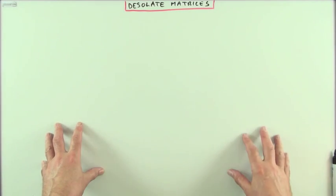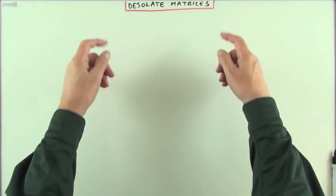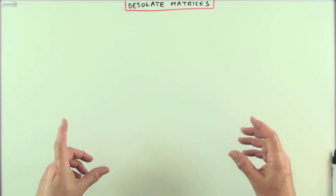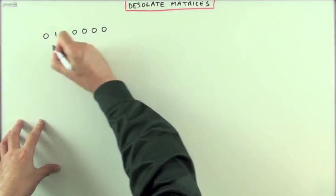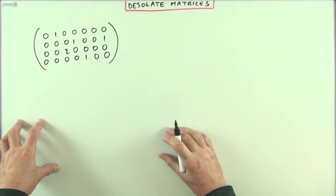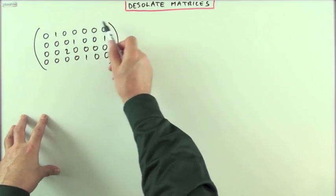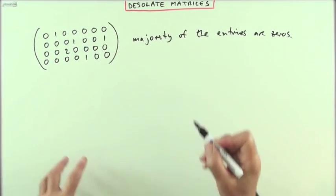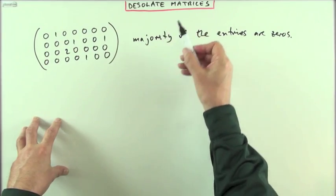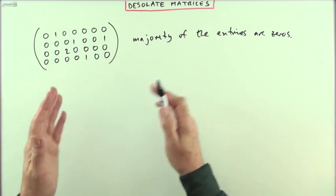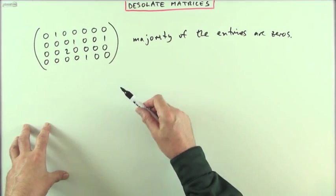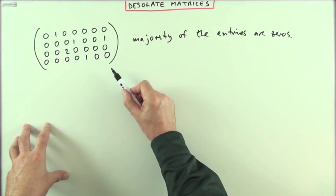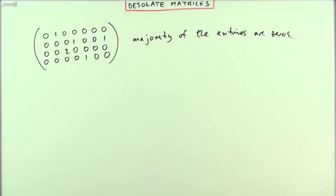Just a short note here on what I'm calling desolate matrices - that is, a matrix where the majority of its entries are zeros. Something like this would count as a desolate matrix. The procedure for multiplying with these matrices, either pre-multiplying or post-multiplying by them, isn't to go through the normal scalar product of the row times the column, but to consider them as compositions of elementary matrices.